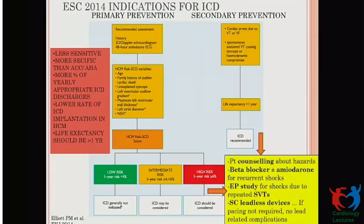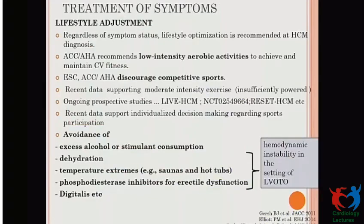The ESC suggests the HCM Risk-SCD score, which predicts 5-year risk. If it is more than 6%, ICD implantation can be considered for primary prevention. For secondary prevention this is a Class 1 indication. The patient's life expectancy should be more than one year.